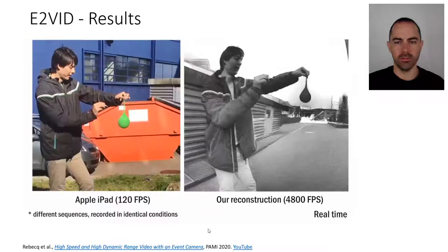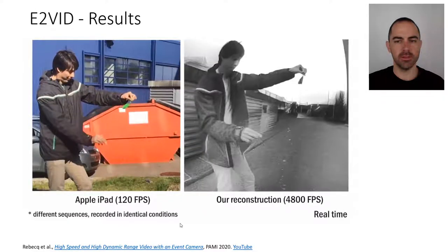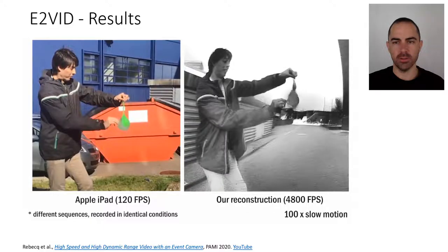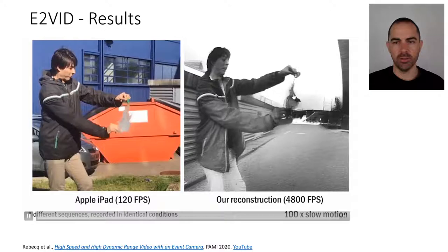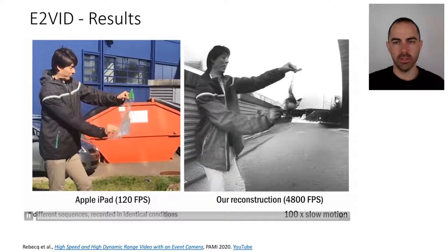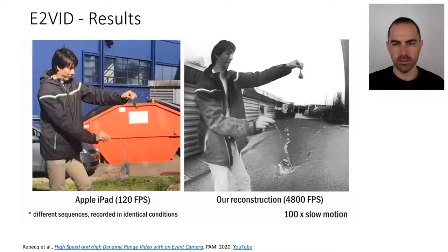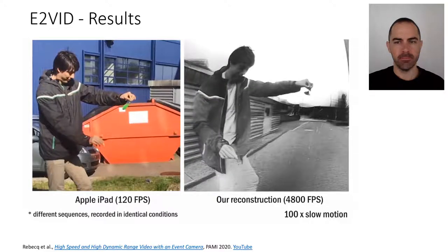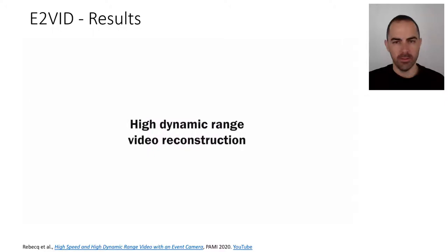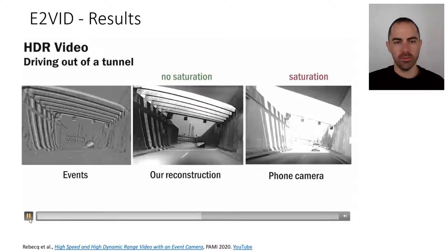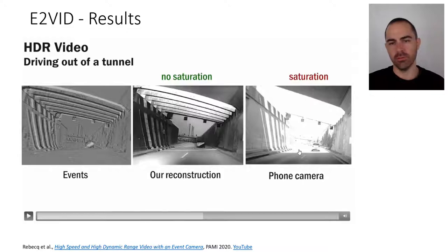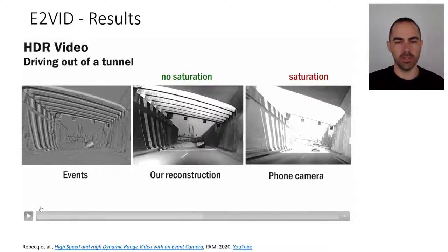The resolution is VGA 640 by 480 pixels. Another example shows popping a balloon — you can see the water and the plastic of the balloon reconstructed. This video also demonstrates that events have inherently high dynamic range, and this method preserves those properties. You can reconstruct images with high dynamic range, unlike a standard camera with a single exposure time for all pixels, which cannot capture very bright and very dark areas simultaneously.